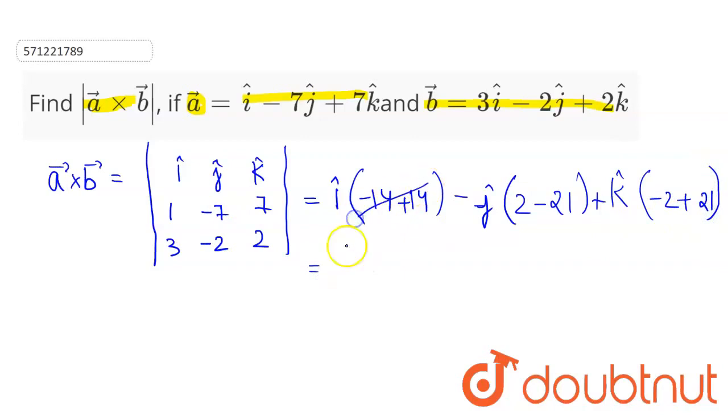The i cap coefficient is 0, so no need to write the i cap term. We can write this as minus j cap times (2 minus 21).